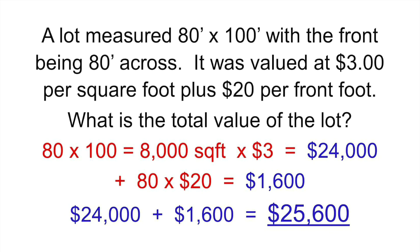Now we're going to add the frontage — the front is 80 feet across, and there's an additional $20 per front foot. So take 80 feet times $20, which equals $1,600. You simply add those together: $24,000 plus $1,600 gives you a grand total of $25,600 for the total value of the lot. You figure the area first — 80 times 100 feet to get the total square footage — then add the extra $20 per foot across the front. You know the frontage was 80 feet across, and that's all that one is.